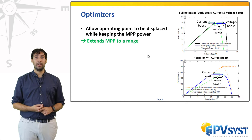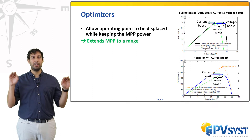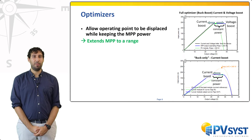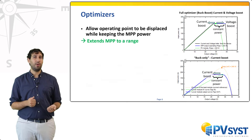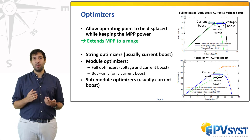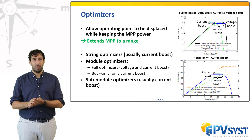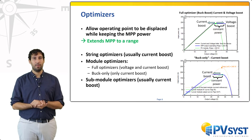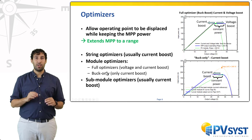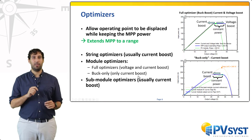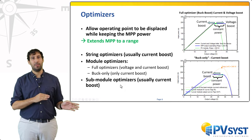In the plot, you can see the effect of an optimizer on the PV curve of a module. The MPP is extended to a flat maximum power range. There are several types of optimizers: string optimizers, that operate at the level of one or several full strings; module optimizers, which extend the MP range of modules and are then connected in series to form a string — we differentiate in PVSYST the terms buck-only, which boosts the current only, and full optimizers, with both current and voltage boost; and finally sub-module optimizers, which are integrated in the module design, with natively three optimizers in parallel per module, lessening the necessity of using bypass diodes.